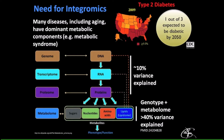This trend toward integrating multiple omic platforms is not going away. We're going to look at genomic, proteomic, and metabolomic analyses together. Certain diseases have a dominant genetic component; others like aging, metabolic syndrome, or type 2 diabetes have a very dominant metabolic component. For example, a large GWAS study looking at markers of type 2 diabetes can explain about 10% of the variance in the population using genes and proteins — but if you add metabolites, you can explain about 40%.